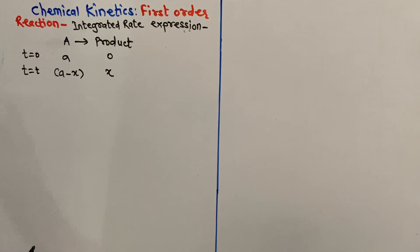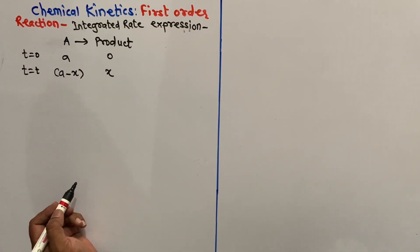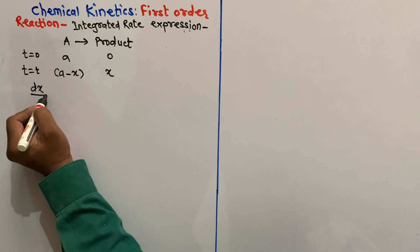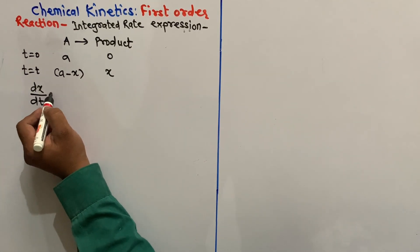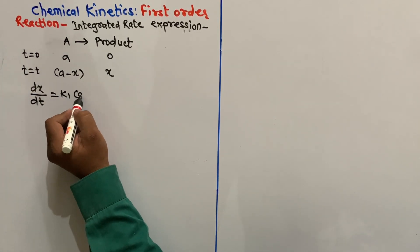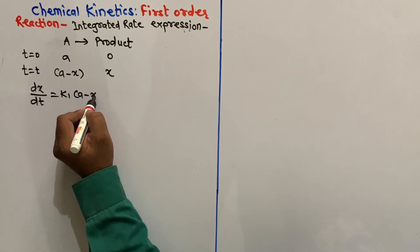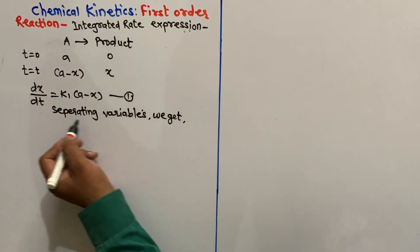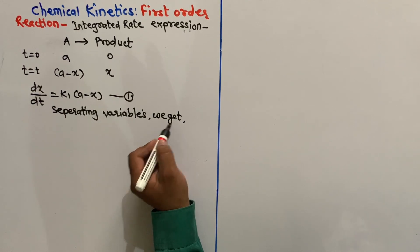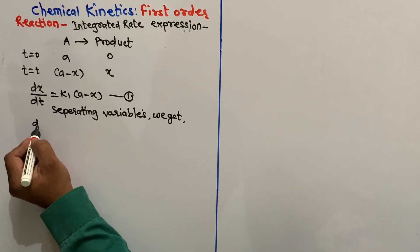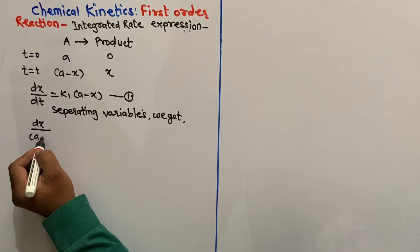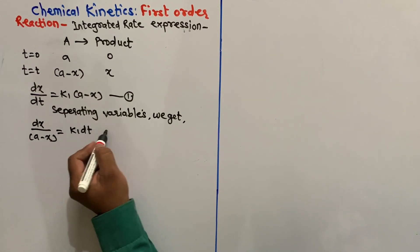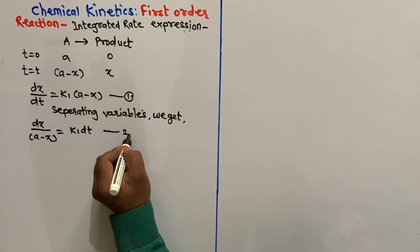Now, as it is a first-order reaction, the rate law can be given as: rate is equal to dx upon dt is equal to k1 into (A minus x). Say it as equation number 1. Now, separating variables, we get dx upon (A minus x) is equal to k1 into dt. Say it as equation number 2.